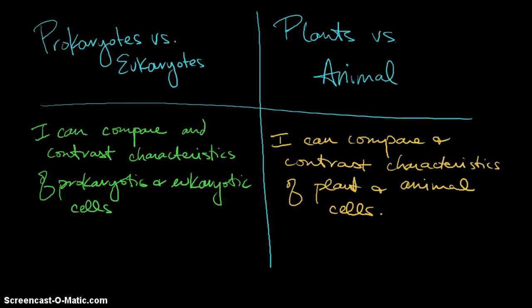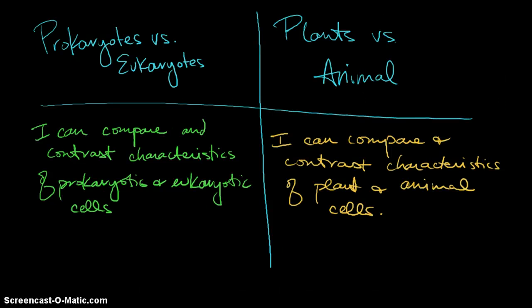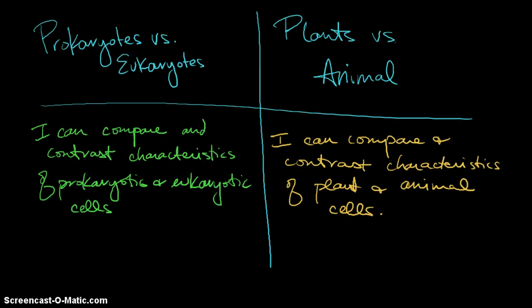This is the next episode of our cell unit. In this episode we're going to cover two ideas: prokaryotes versus eukaryotes, and plants versus animals, and these are the two learning targets listed underneath.